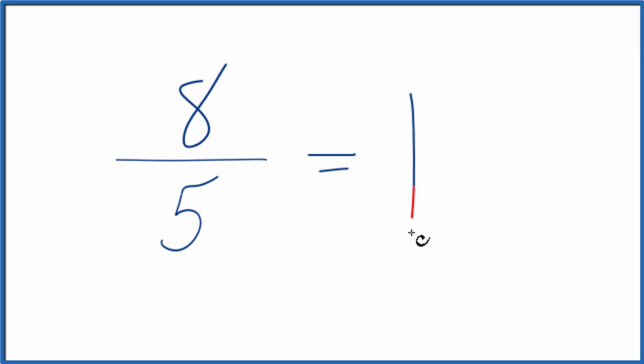Five goes into eight one time with three left over. We bring the five across. So eight-fifths, the improper fraction, that's equal to the mixed number one and three-fifths.